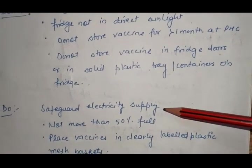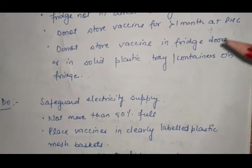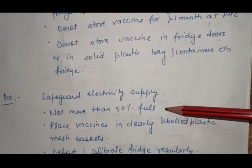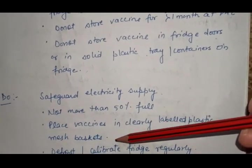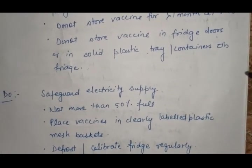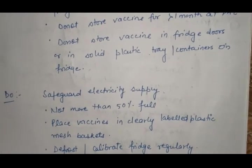DOs for refrigerator: Safeguard electricity supply with additional backup. Not more than 50% full. Place vaccines in clearly labeled plastic mesh baskets. Defrost or calibrate fridge regularly and record temperature twice a day.